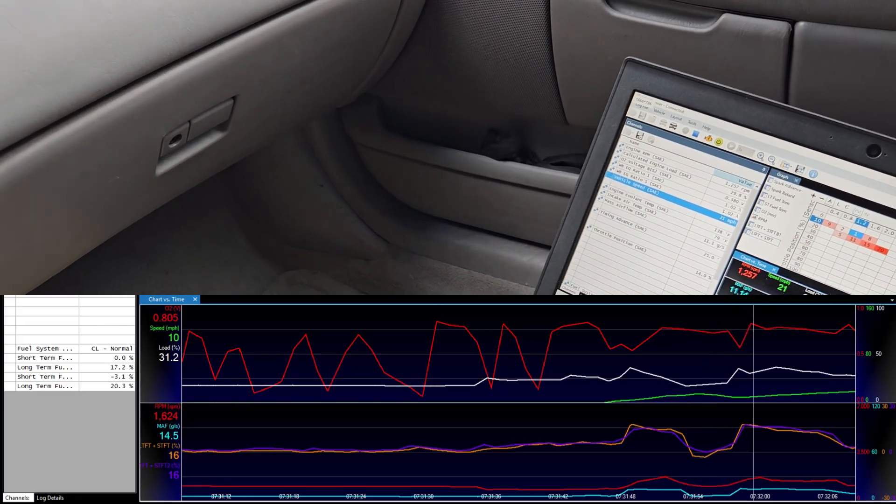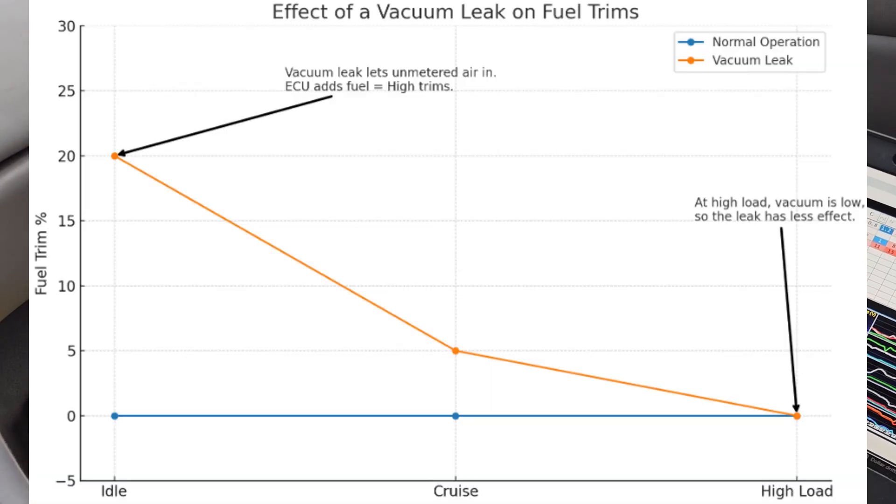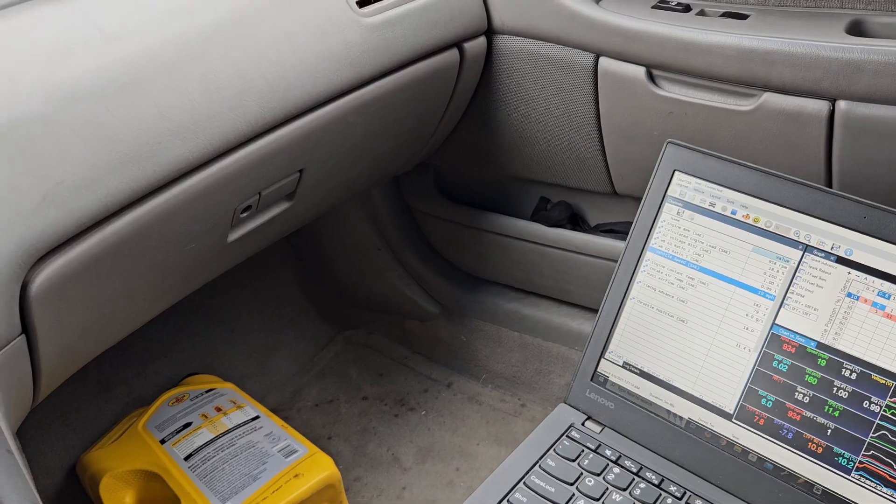In a vacuum leak, the more load you have on the engine, meaning the less vacuum you have in the engine, the better the trims will get or the more normal they will get.